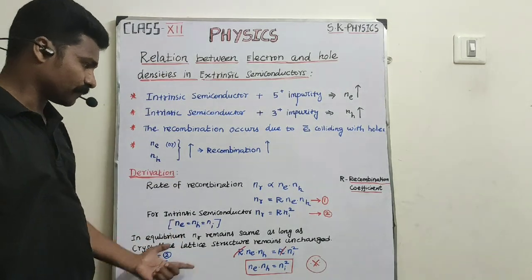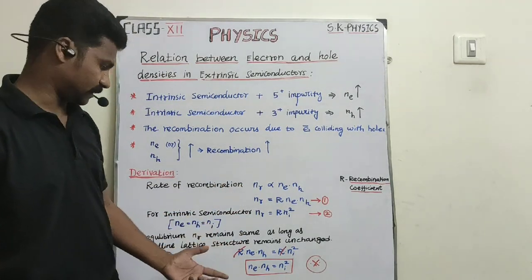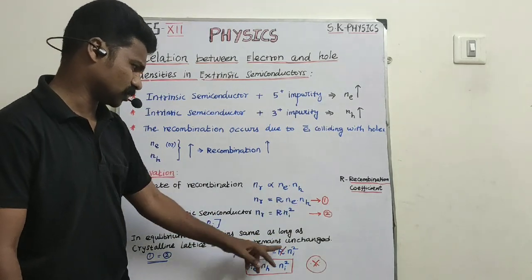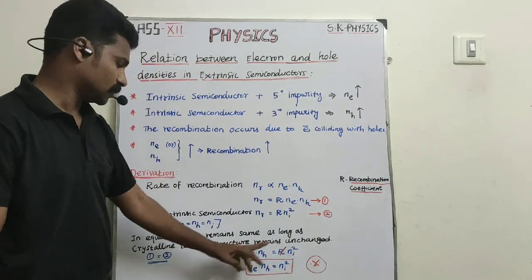Therefore, r into Ne into Nh equals r into Ni square. The r cancels out, giving us Ne times Nh equals Ni square. This relationship is useful for solving problems in semiconductors.